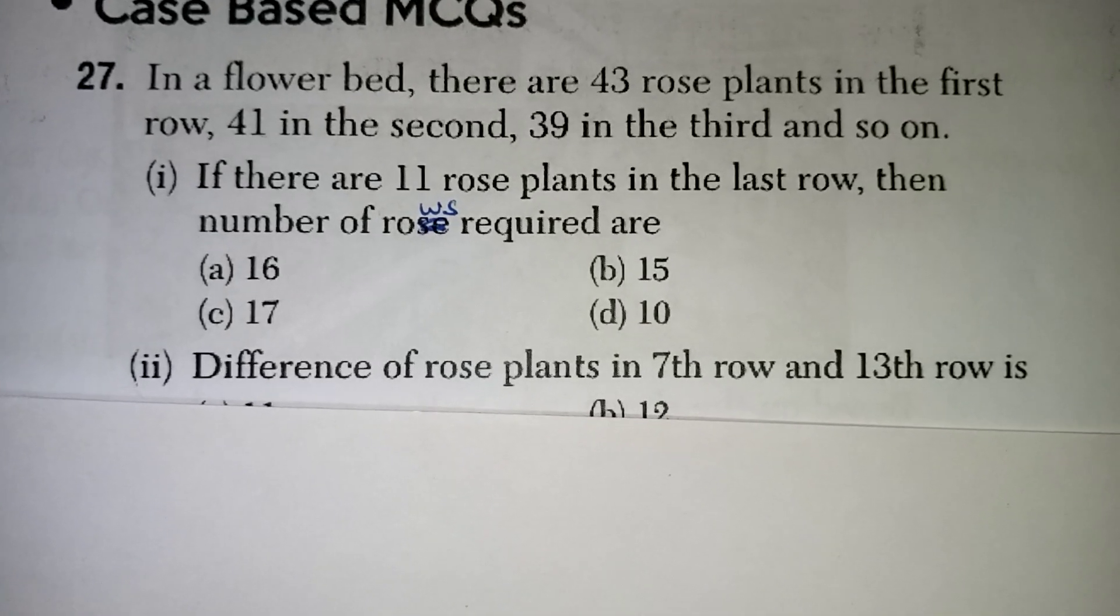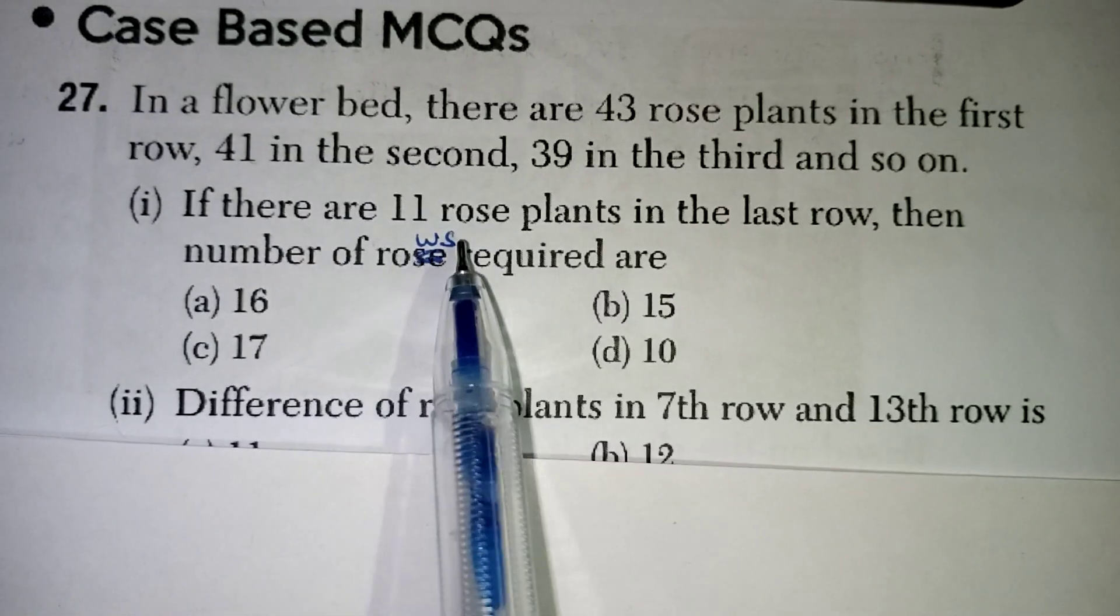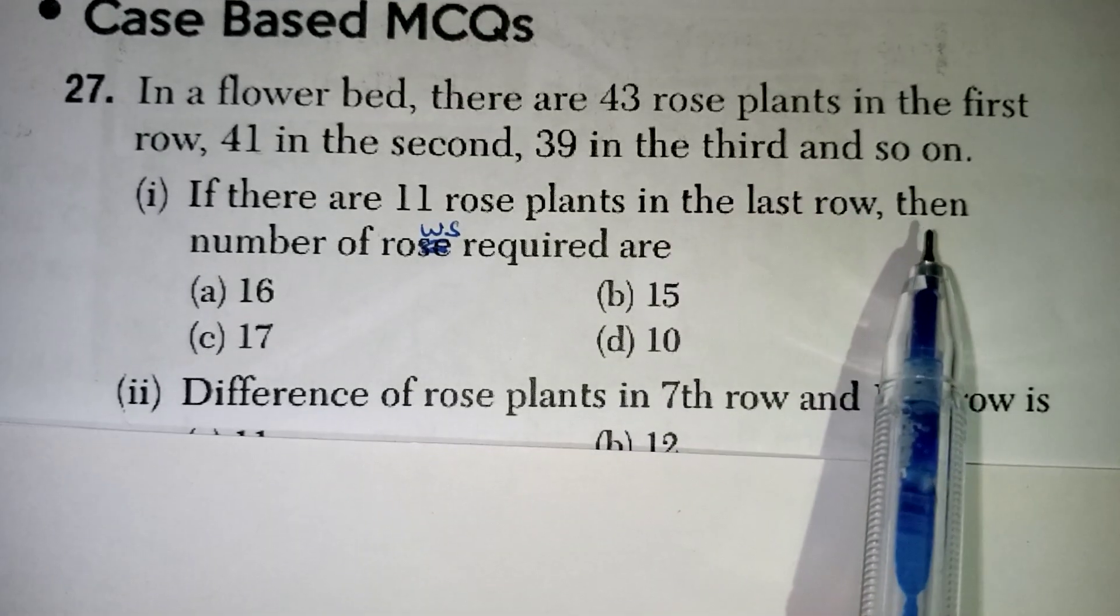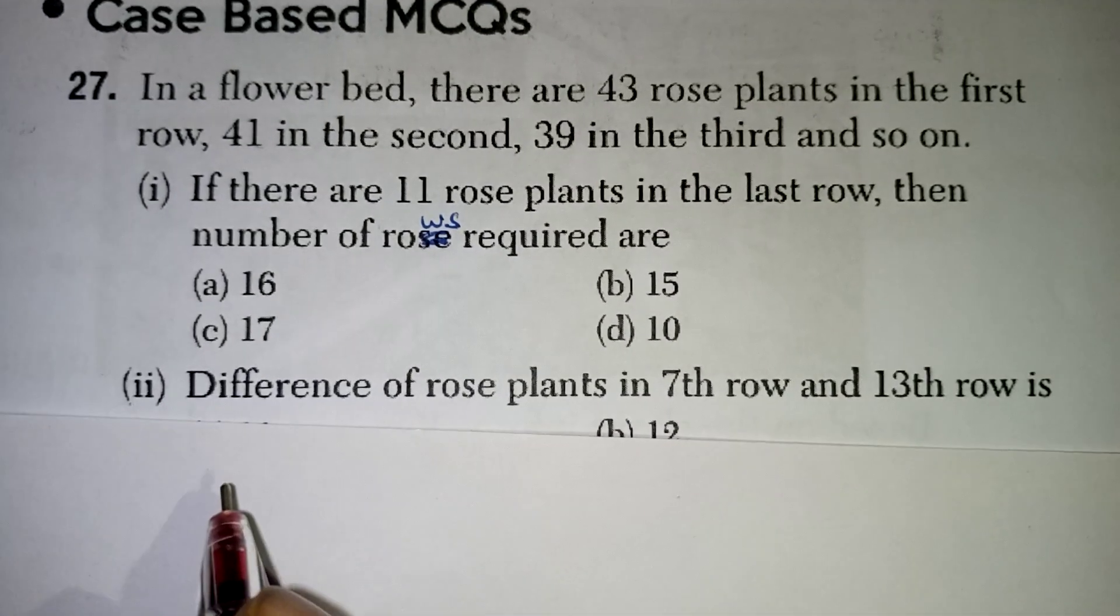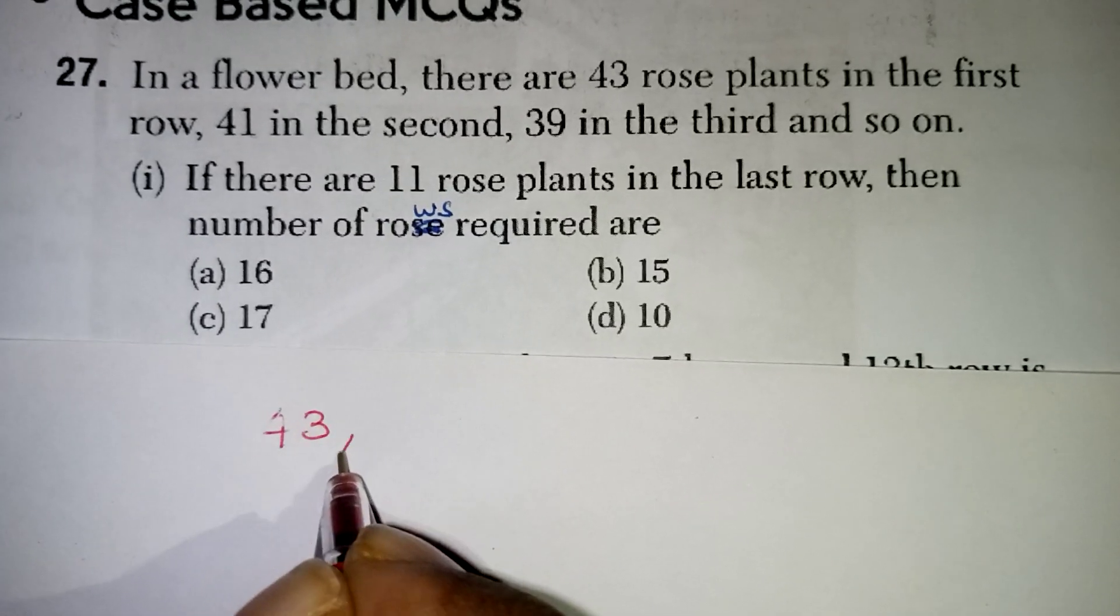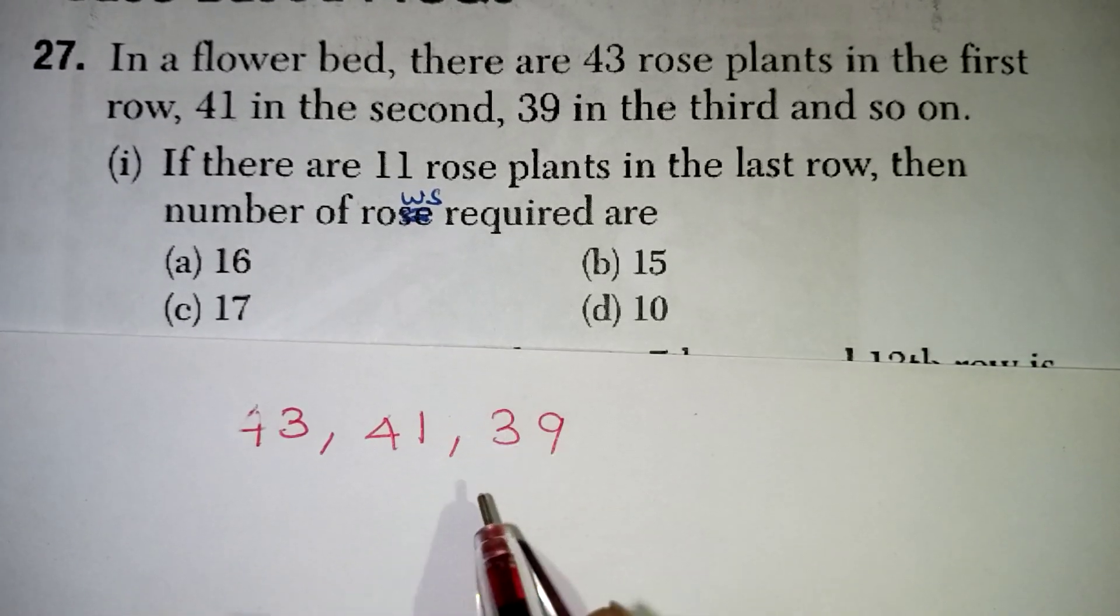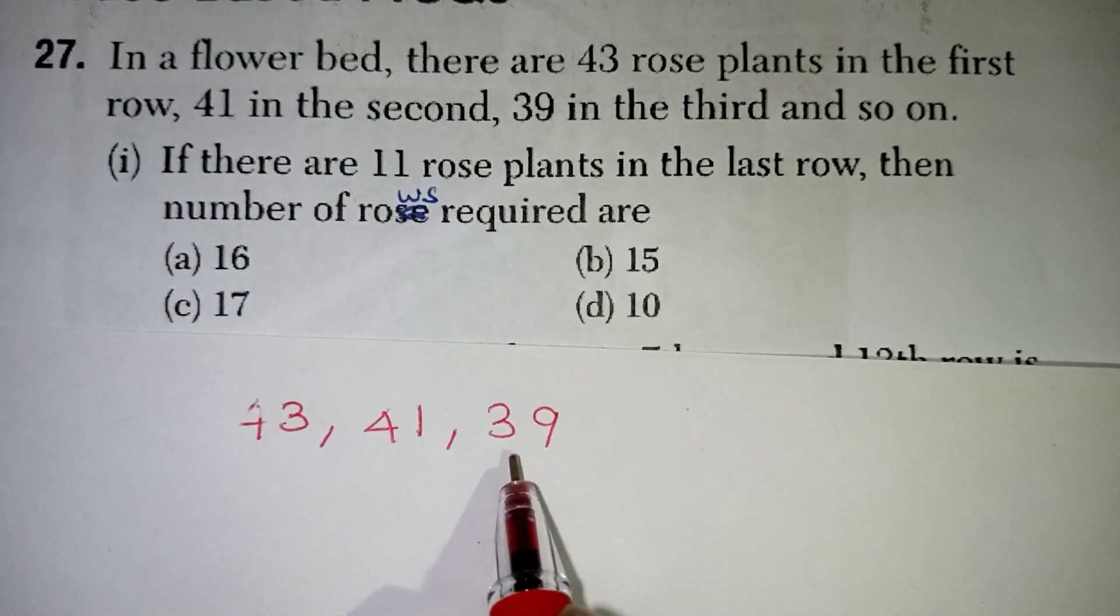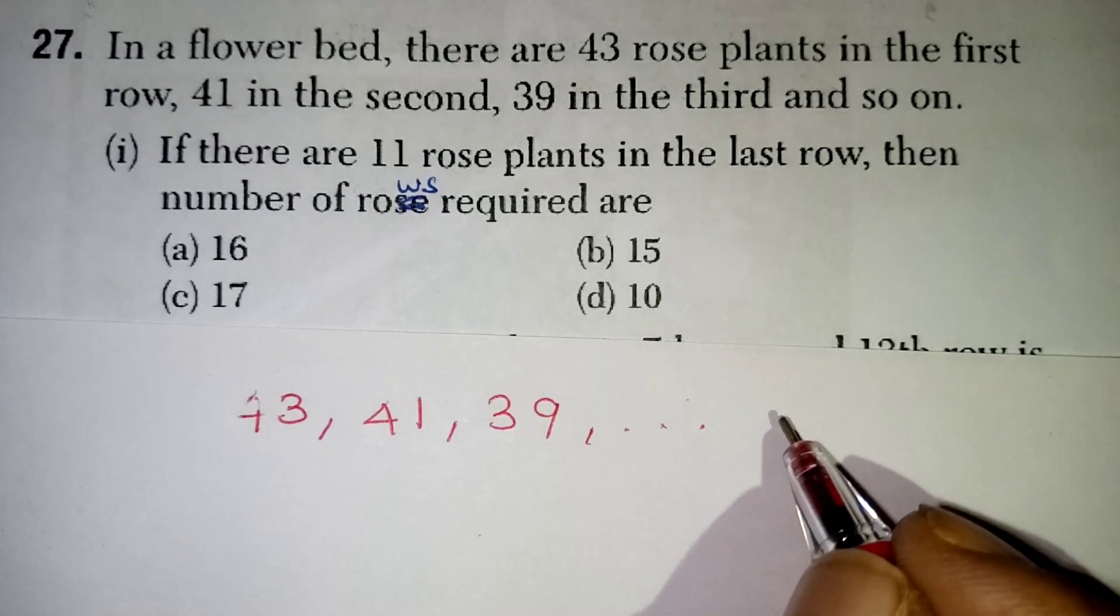In a flower bed, there are 43 rose plants in the first row, 41 in the second, 39 in the third and so on. So they have given us very clearly, the first row consists of 43 plants, second row 41 plants, third row 39 plants. So it is reduced by 2 and it is going on. So definitely it forms an AP.